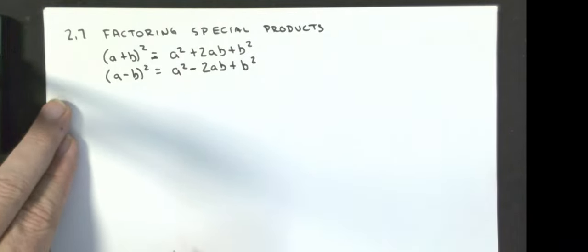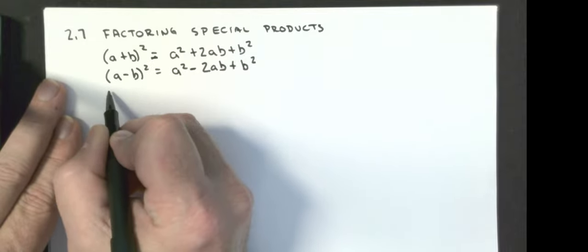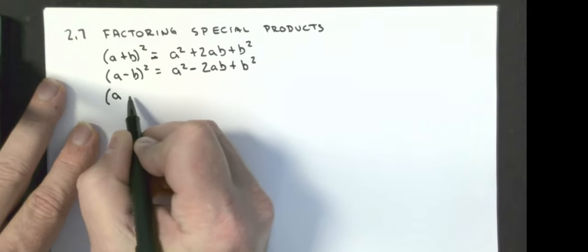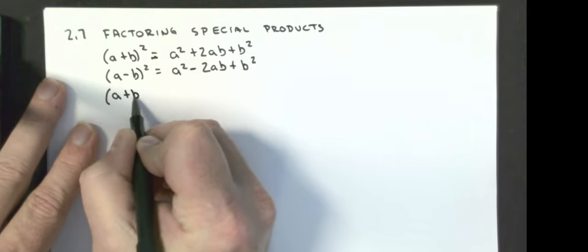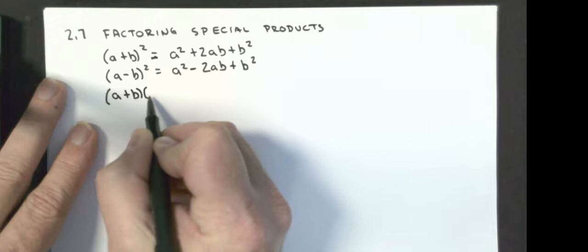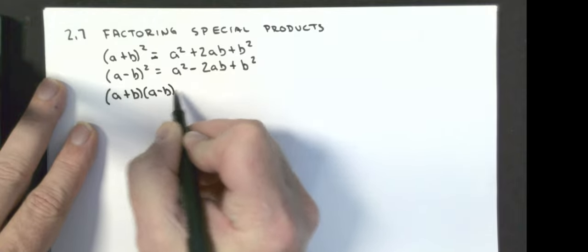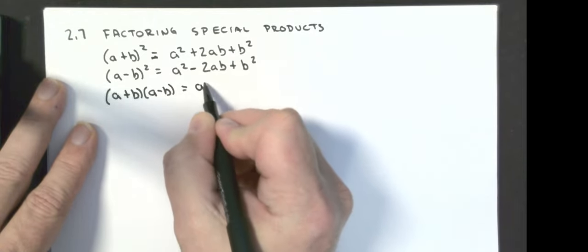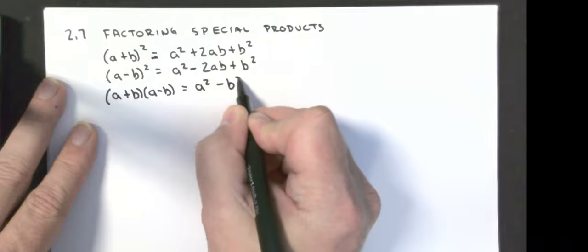The other special product that we dealt with were the conjugate pairs: (a + b) times (a minus b), and that gives us the first term squared minus the last term squared.